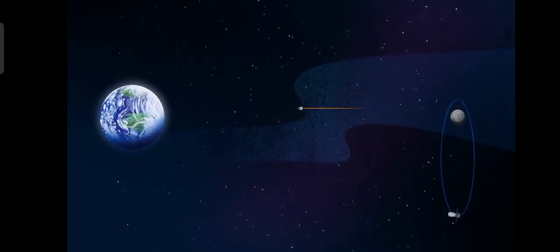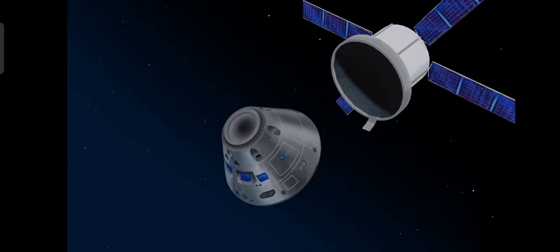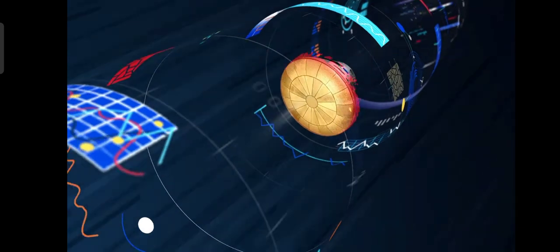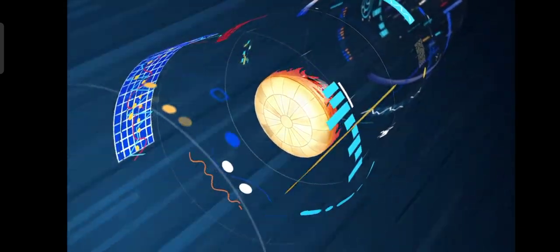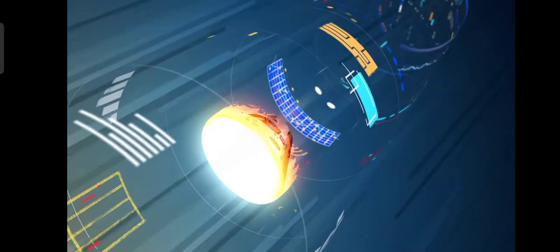As they near the end of this journey, the service module is released and the crew module is oriented heat shield first. Entering Earth's atmosphere at 25,000 miles per hour, the friction of air slows Orion considerably, while also subjecting it to temperatures of 5,000 degrees.